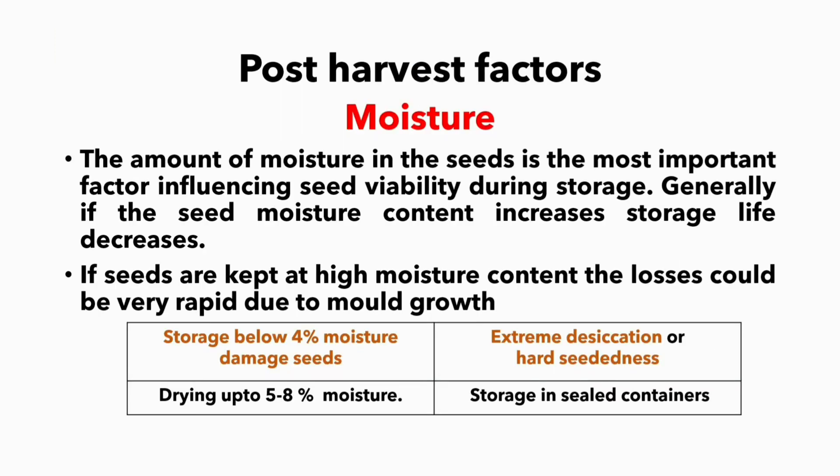We completed pre-harvest factors and now we are going to see post-harvest factors. First one is moisture — the most important factor influencing seed viability during storage. Generally, if the seed moisture content increases, storage life decreases. If seeds are kept at a high moisture content, the losses would be very rapid due to mold growth.